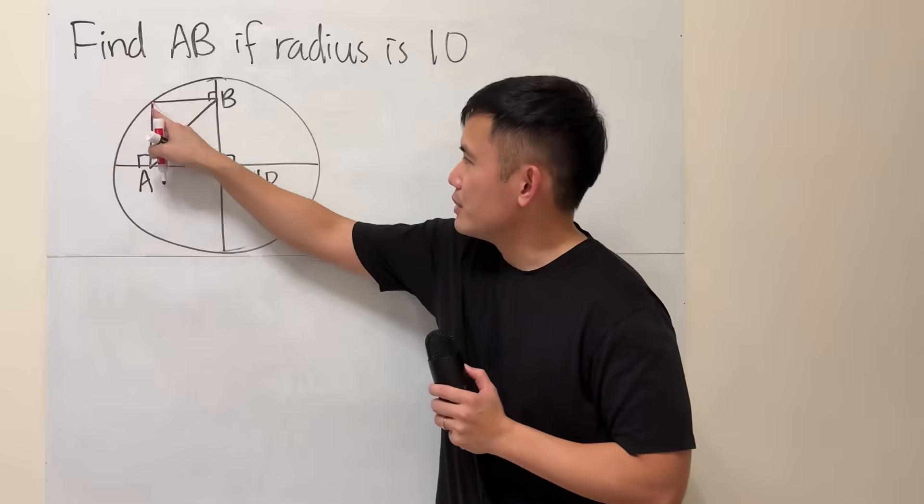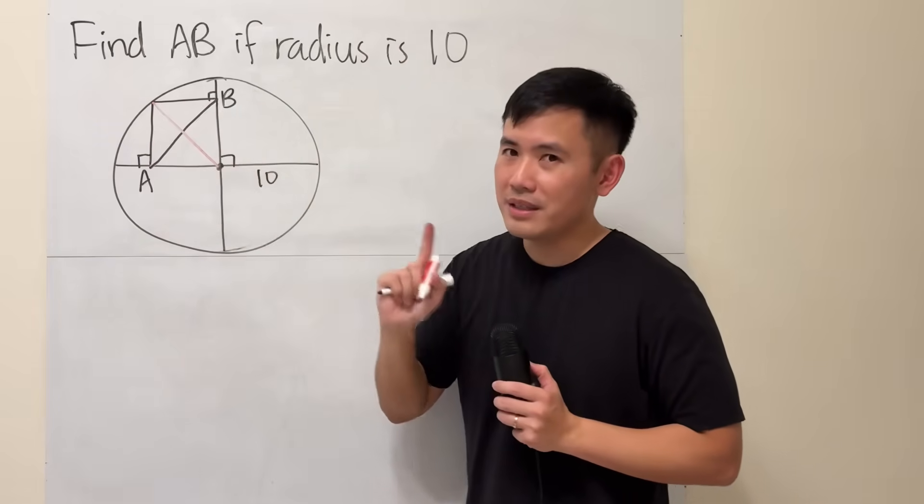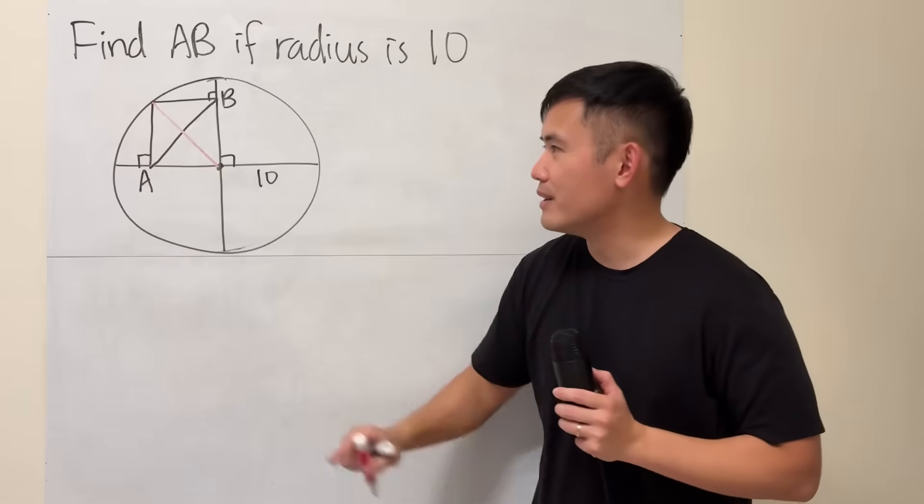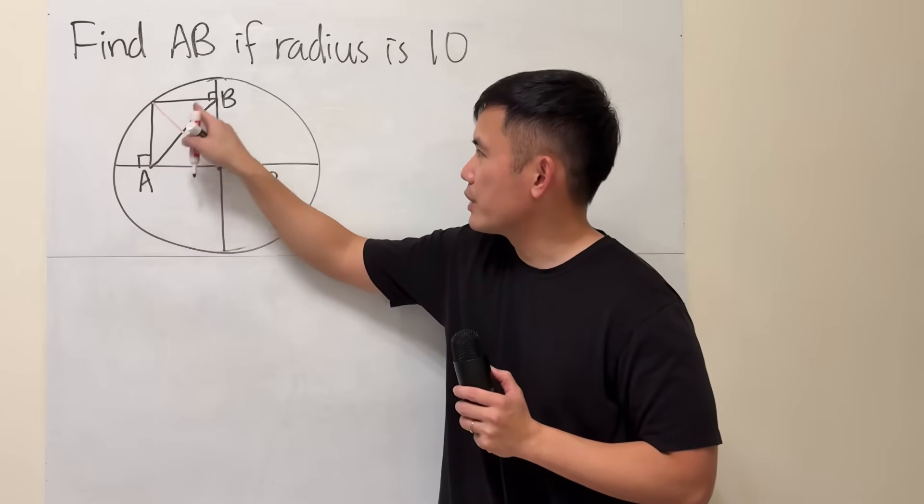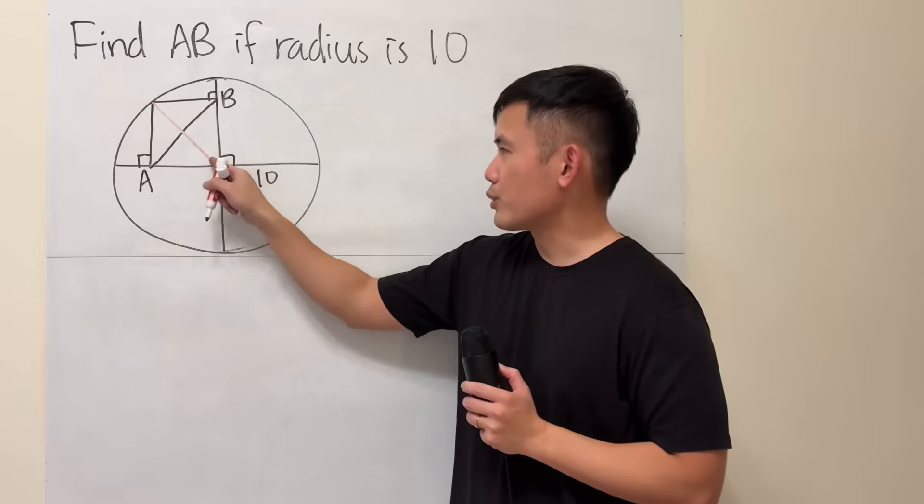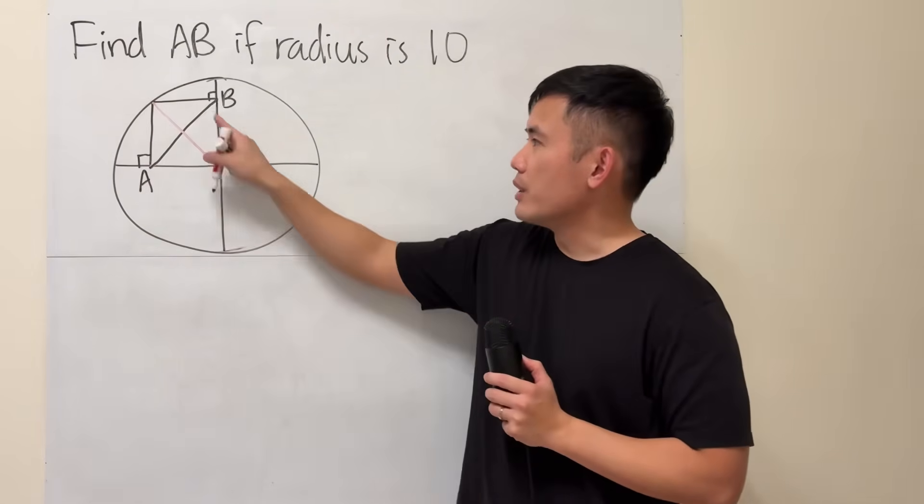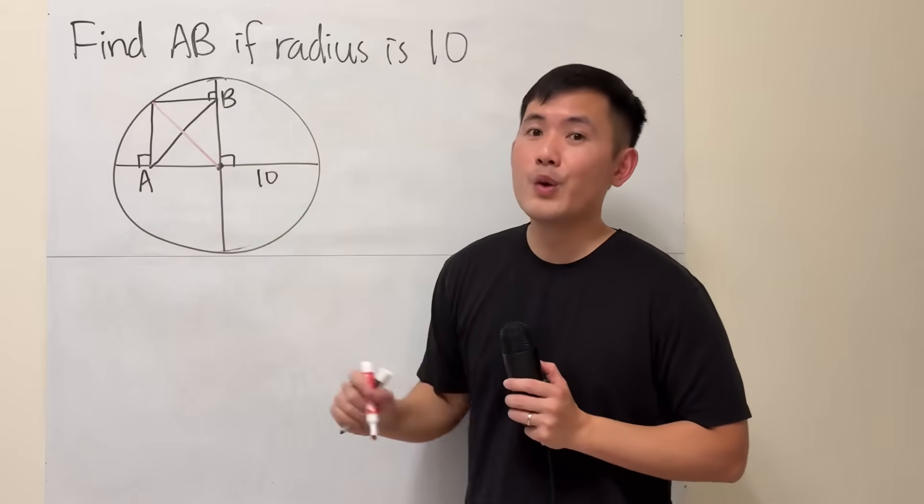Why? First, look at this. Well, it cannot be a square. You don't know if it's a square or not, but I can say it's a rectangle. Because we have right angles here, here, and here. So all the angles inside are 90 degrees. So this part is a rectangle.